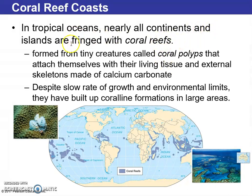In tropical oceans, nearly all continents and islands are fringed with coral reefs. Coral reefs are formed from calcium carbonate from living organisms. Notice where barrier reefs are seen — mostly on the east sides of coasts. We see quite a bit in South Asia and Australia, some on the east coast of Africa, east coast of South America, Middle America (formerly called Central America), and quite a bit out in the Pacific Ocean.